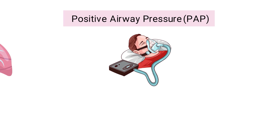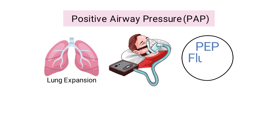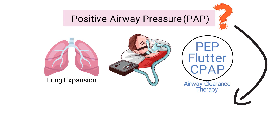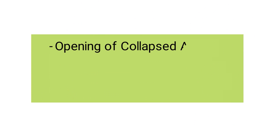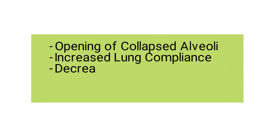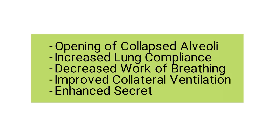Next we have positive airway pressure (PAP), a technique in which a device delivers positive pressure to improve lung expansion. It involves the use of PEP, flutter, and CPAP. PEP and flutter can be used for airway clearance therapy; however, we're looking at how PAP can be used to treat and prevent atelectasis. In general, positive airway pressure therapy helps increase the patient's functional residual capacity, resulting in the opening of collapsed alveoli, increased lung compliance, decreased work of breathing, improved collateral ventilation, and enhanced secretion removal.